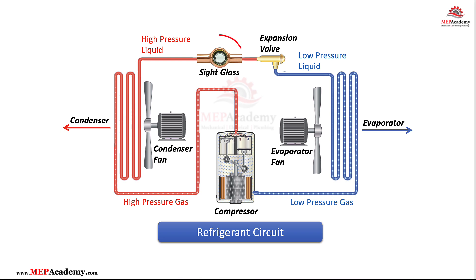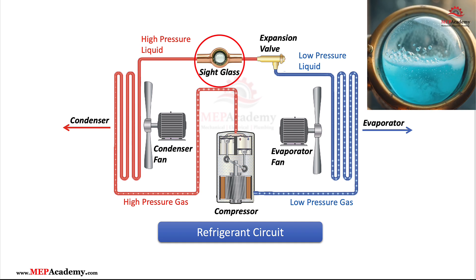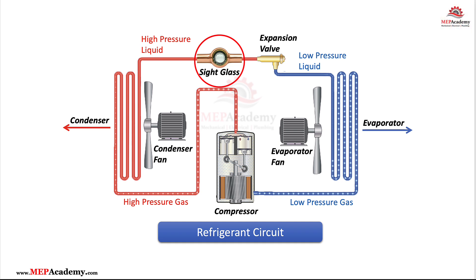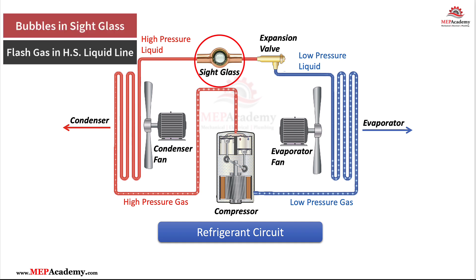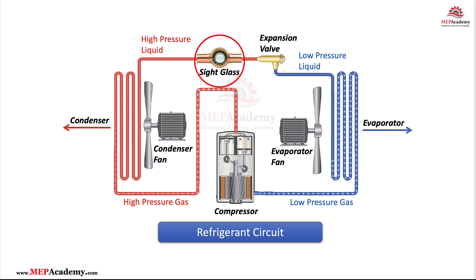Here on the liquid line, just before the expansion valve, you'll notice the sight glass. This is a critical inspection point for technicians. When the system is running properly, the sight glass should show a clear, full column of liquid refrigerant. If you see bubbles or foam here, it could indicate flash gas in the liquid line, often caused by a low refrigerant charge, loss of subcooling, or excessive heat gain in the line. Always remember: clear sight glass, healthy system.